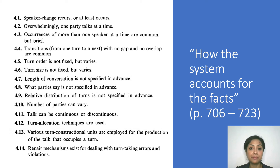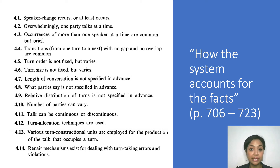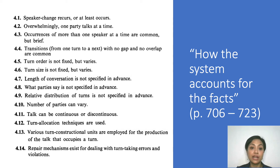The next section of the paper is titled 'How the System Accounts for the Facts.' I'm not going to discuss each of the observations here since this section is essentially a second look at the 14 observations discussed in the earlier section — much like how we went through the rules quickly and then had a second look after gaining a better understanding of TRP, TCU, and turn.